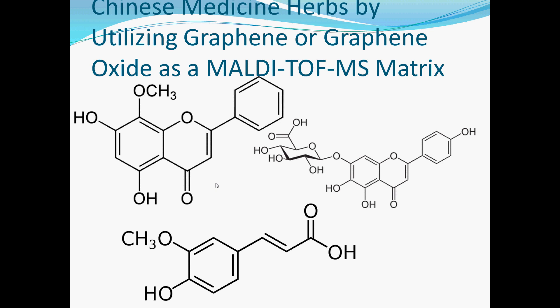The actual paper of interest that I wrote about in my paper for this presentation was analysis of Chinese medicine herbs using a new matrix, graphene and graphene oxides. The three components of these traditional Chinese herbs that were measured were wogninin, ferulic acid, and scutilarin, from top left to bottom right.